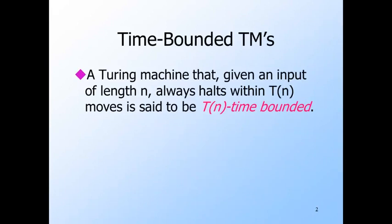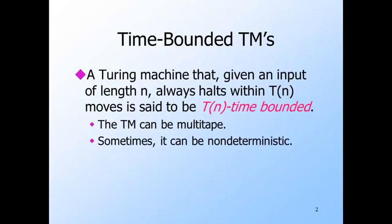We say a Turing machine is T(n) time-bounded, where T(n) is some function like n squared or 2^n, if given an input of length n, the machine always halts in at most T(n) steps. We allow the Turing machine to have several tapes. In practice, a deterministic multi-tape Turing machine is close to the idea of an algorithm that runs in time O(T(n)). While some algorithms take longer on a Turing machine than on a real computer, these cases are rare.